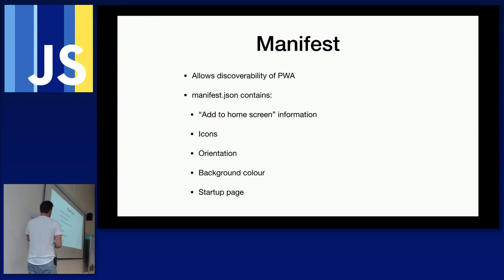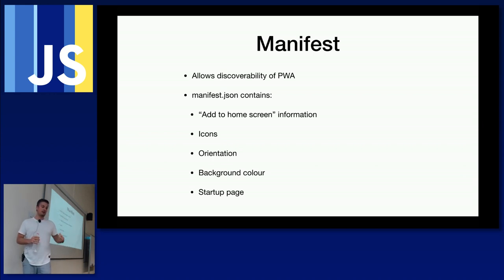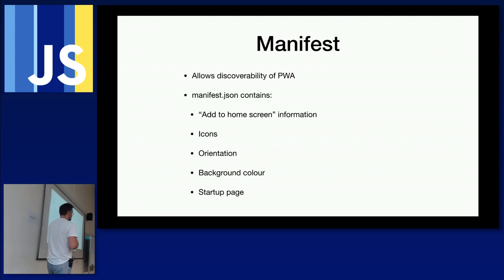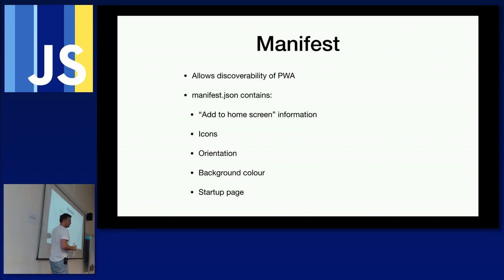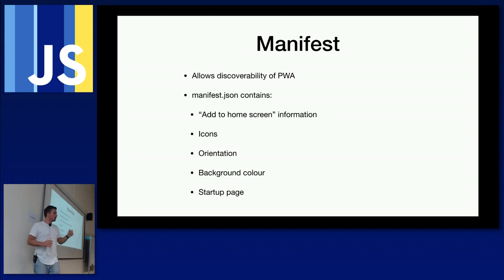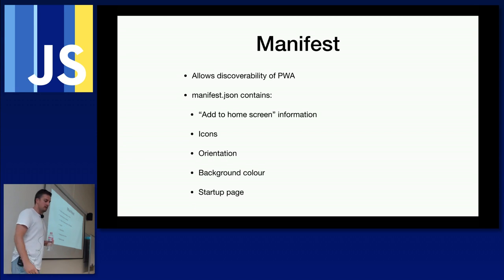The manifest file is a simple JSON file. At bare minimum it should contain: the name of the icon you want on your mobile device after installing, where the icons are, what orientation the app should start in, background color, and start URL — what page should launch when you tap that icon. Browsers can pick this up and use it when installing the PWA.